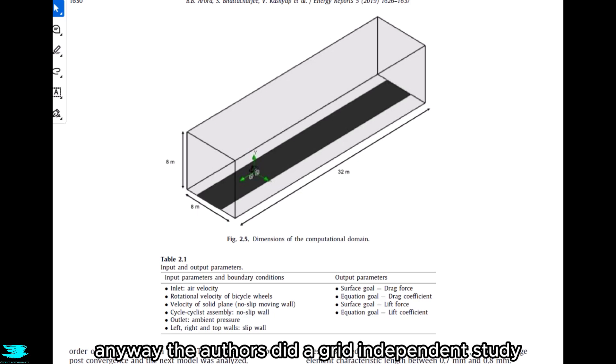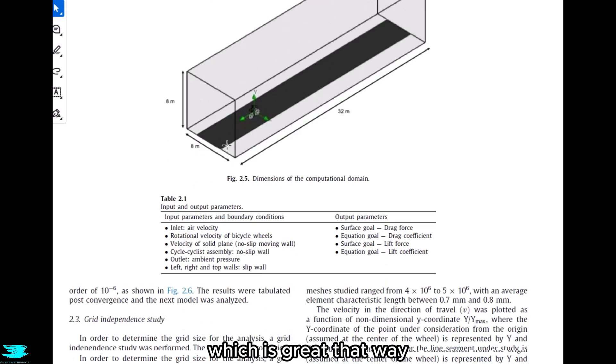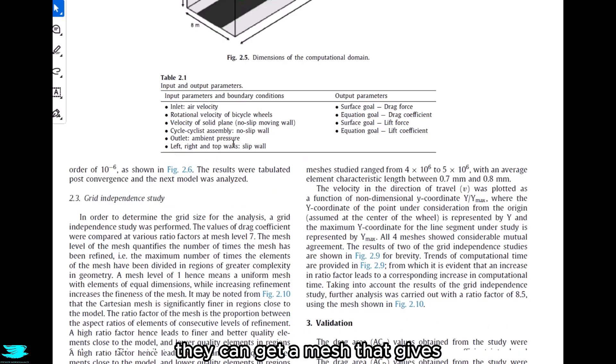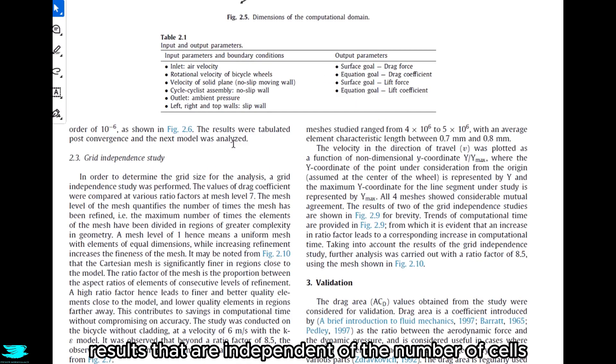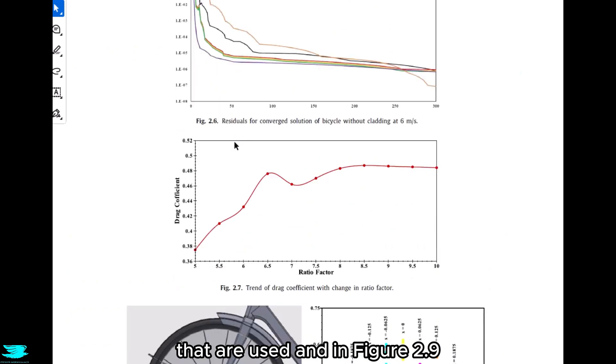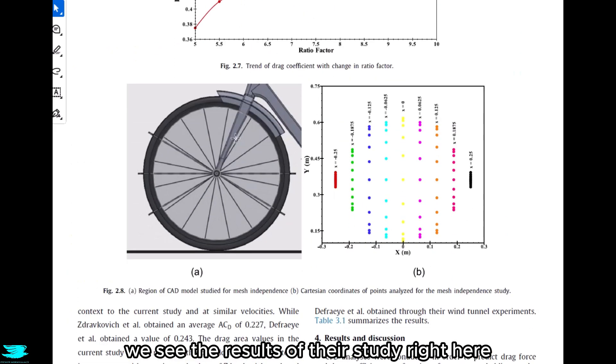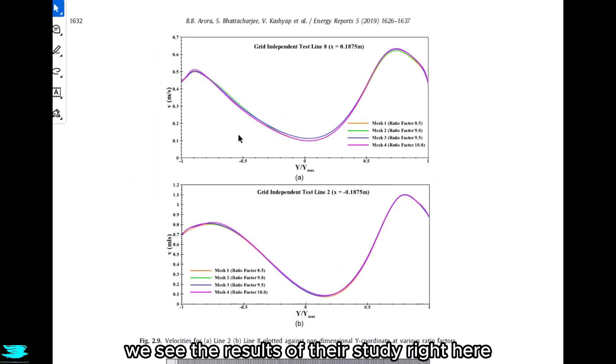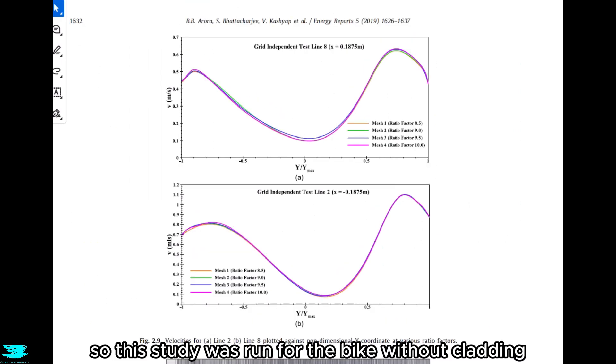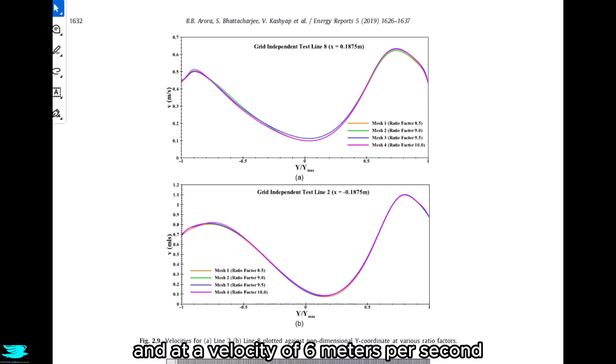Anyway, the authors did a grid-independence study, which is great. That way they can get a mesh that gives results that are independent of the number of cells that are used. And in figure 2.9, we see the results of their study, right here. This study was run for the bike without cladding and a velocity of 6 meters per second, which is about 22 kilometers per hour. A pretty gentle ride.